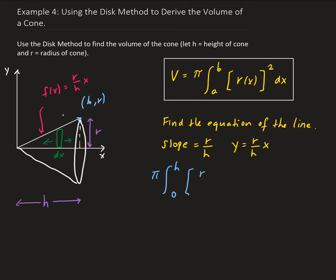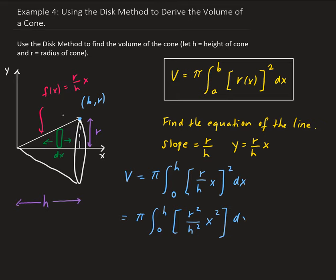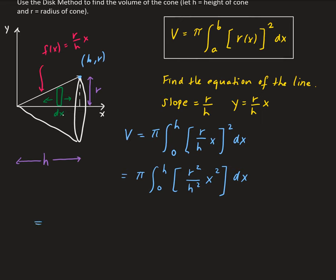So we're going to have r over h times x, squared. This gives us pi times the integral from zero to h of r squared over h squared times x squared. We can pull out the r squared over h squared since r and h are constants, giving us the integral from zero to h of x squared. Taking the integral of x squared, we get x cubed over three. So we have pi times r squared over h squared times one-third x cubed.